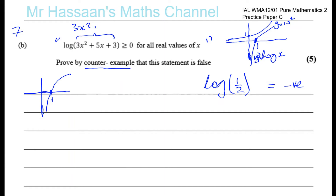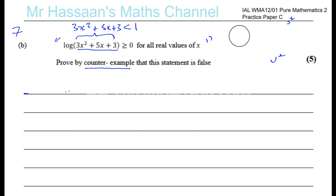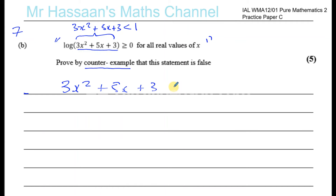So if 3x² + 5x + 3 is less than 1 — if the value of the thing you take the log of is less than 1 — then this statement will be false. We have to find a value of x which causes this expression to be less than 1, which means solving the inequality 3x² + 5x + 3 < 1.